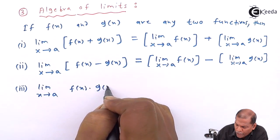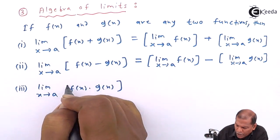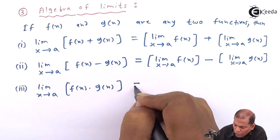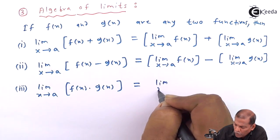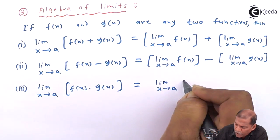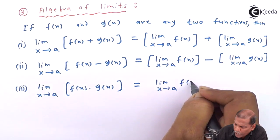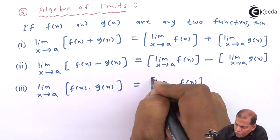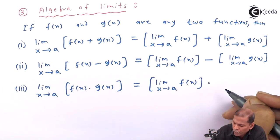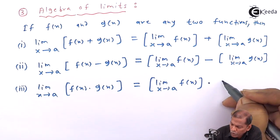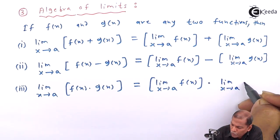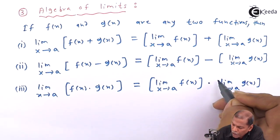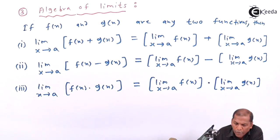Formula number three: limit x tends to a of [f(x) into g(x)] is equal to limit x tends to a of f(x), into limit x tends to a of g(x).